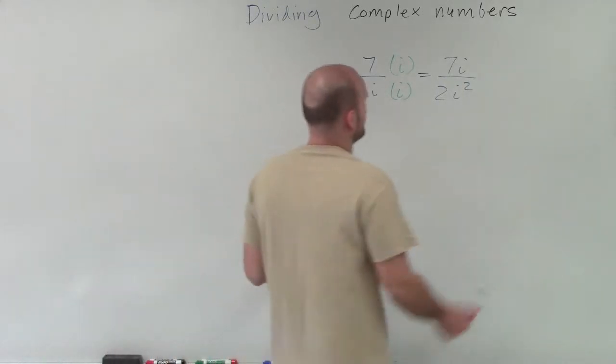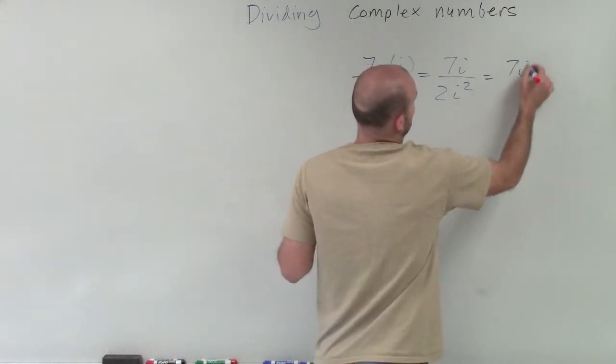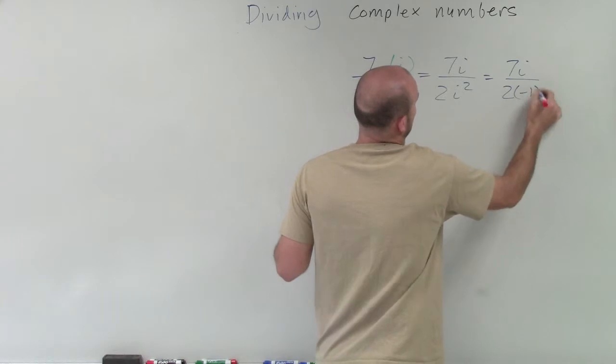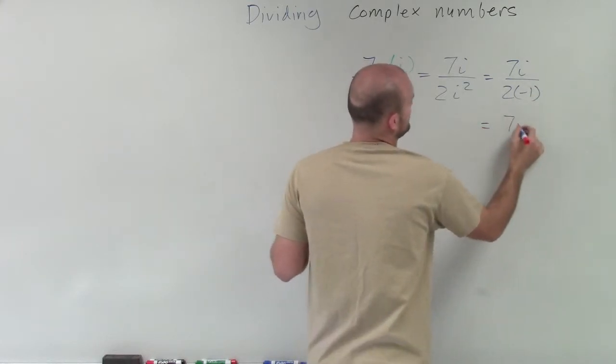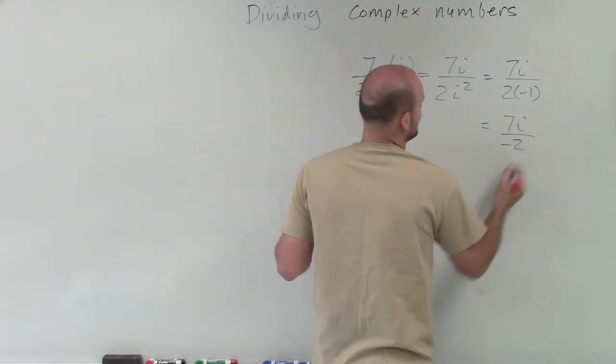And i squared represents negative 1. So therefore, this equals 7i divided by 2 times negative 1, which equals 7i divided by negative 2.